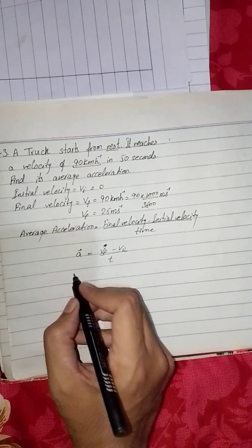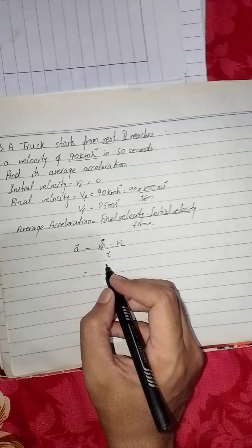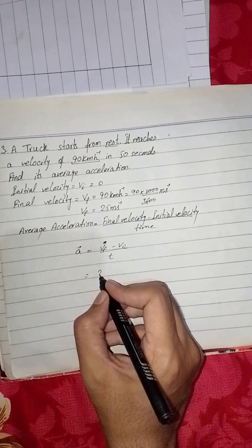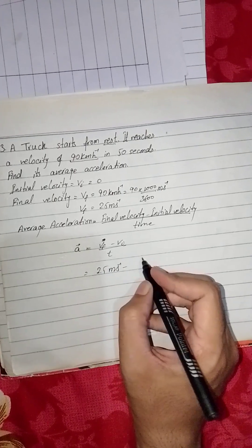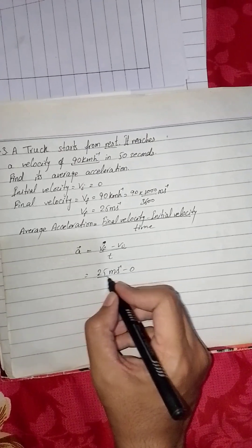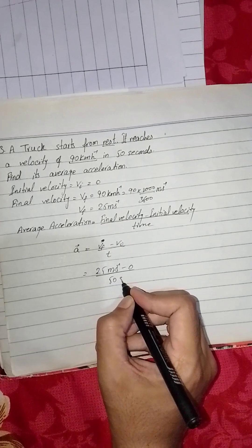So vf, here we're putting the values: vf is 25 meter per second minus vi is 0, divided by 50 seconds.